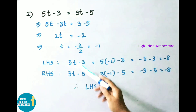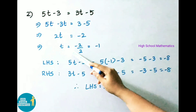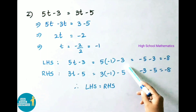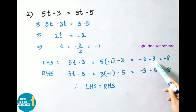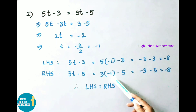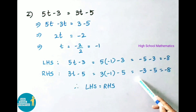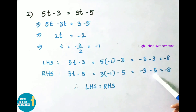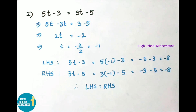Check: LHS is 5t − 3 = 5 × (−1) − 3 = −5 − 3 = −8. RHS is 3t − 5 = 3 × (−1) − 5 = −3 − 5 = −8. LHS and RHS both equal −8. Therefore LHS = RHS.